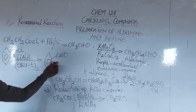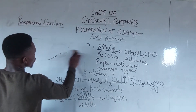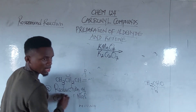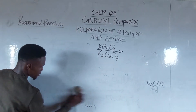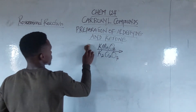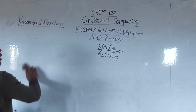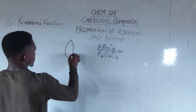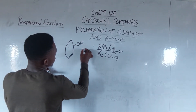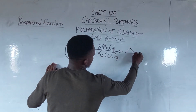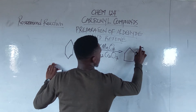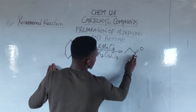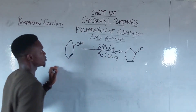Now let us go to ketone. How are ketones prepared? Ketone is prepared when a secondary alcohol is oxidized. When secondary alcohol is oxidized, it produces an alkanone. For example, a five-carbon secondary alkanone can be illustrated as follows — this is what an alkanone.